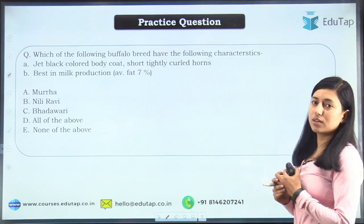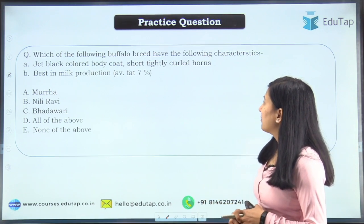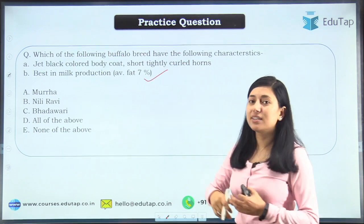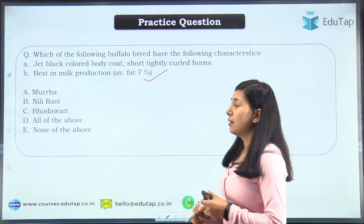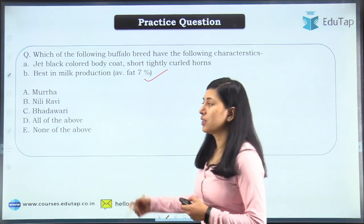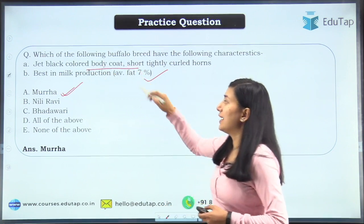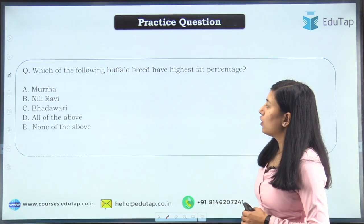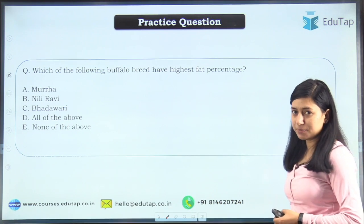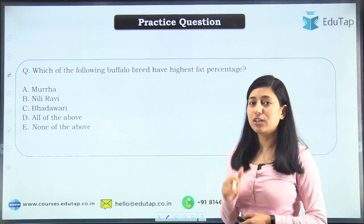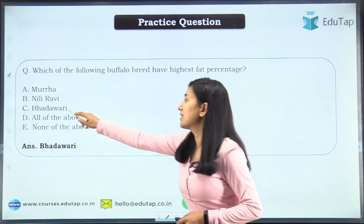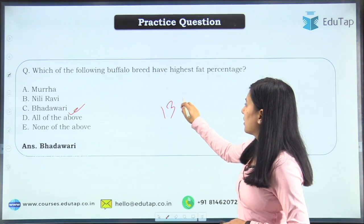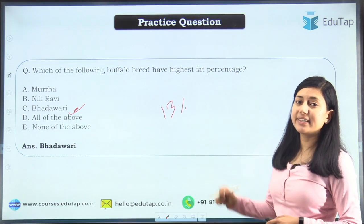Now let's do some questions on buffalo breeds. Question 1: Which buffalo breed has jet black body coat, short tightly curled horns, best milk production, and 7% average fat? Answer: Murrah. Question 2: Which buffalo breed has the highest fat percentage? Answer: Bhadavari, with 13% fat content in its milk.